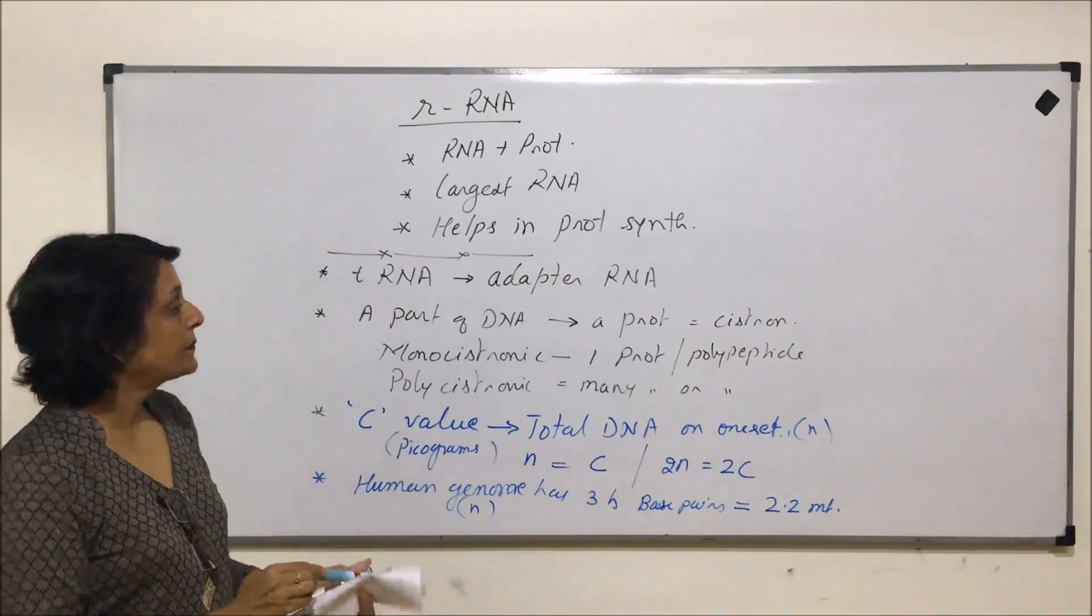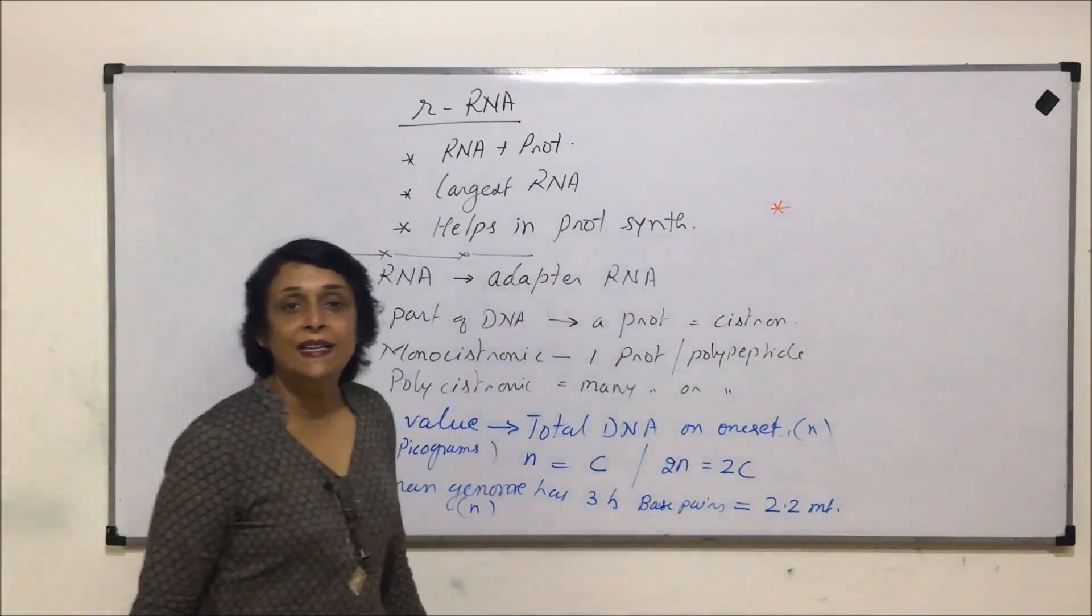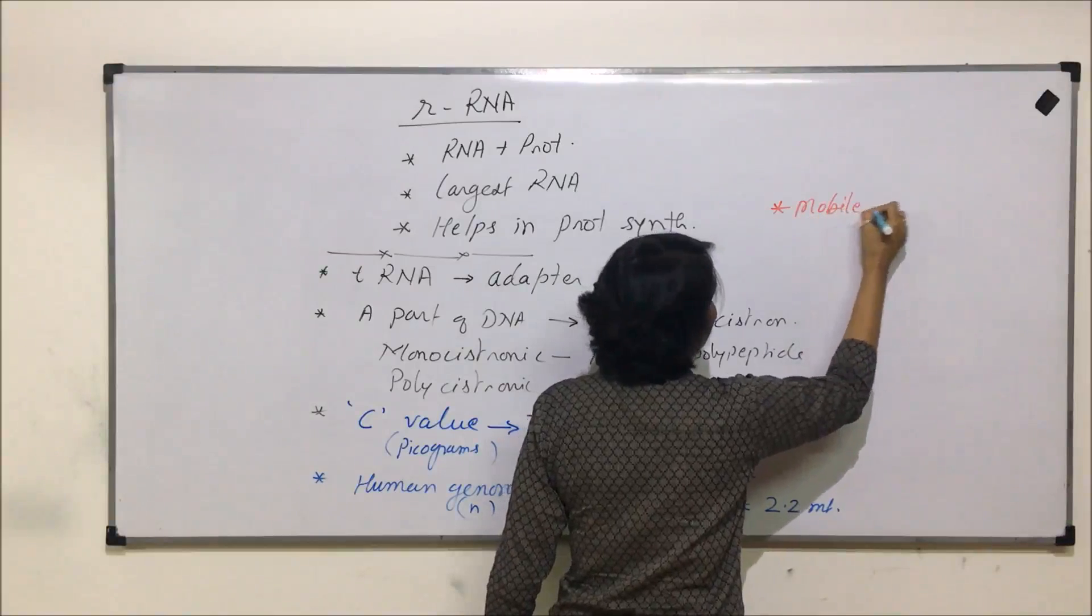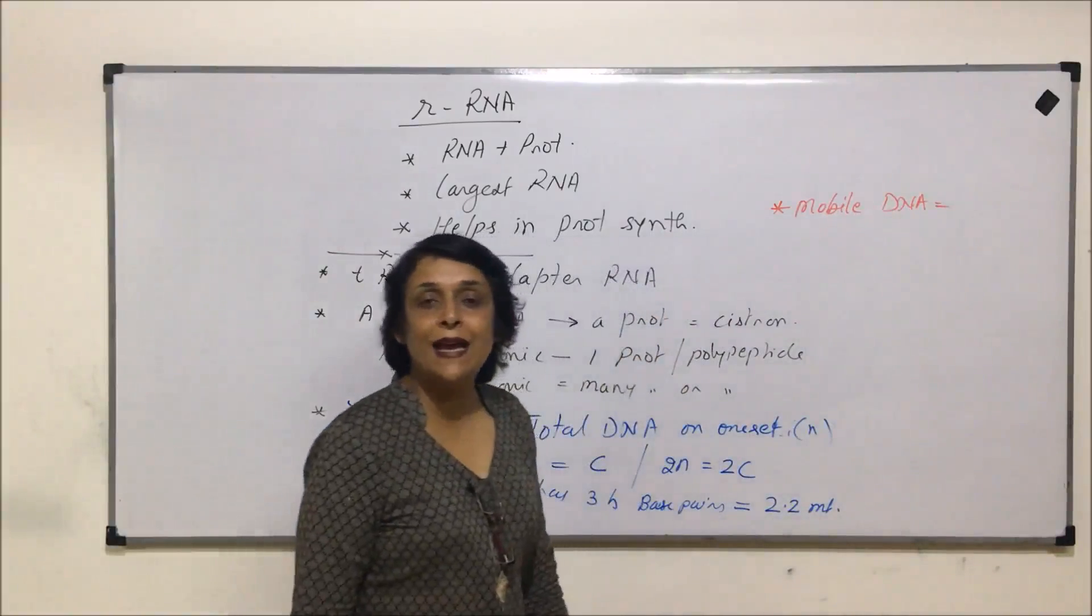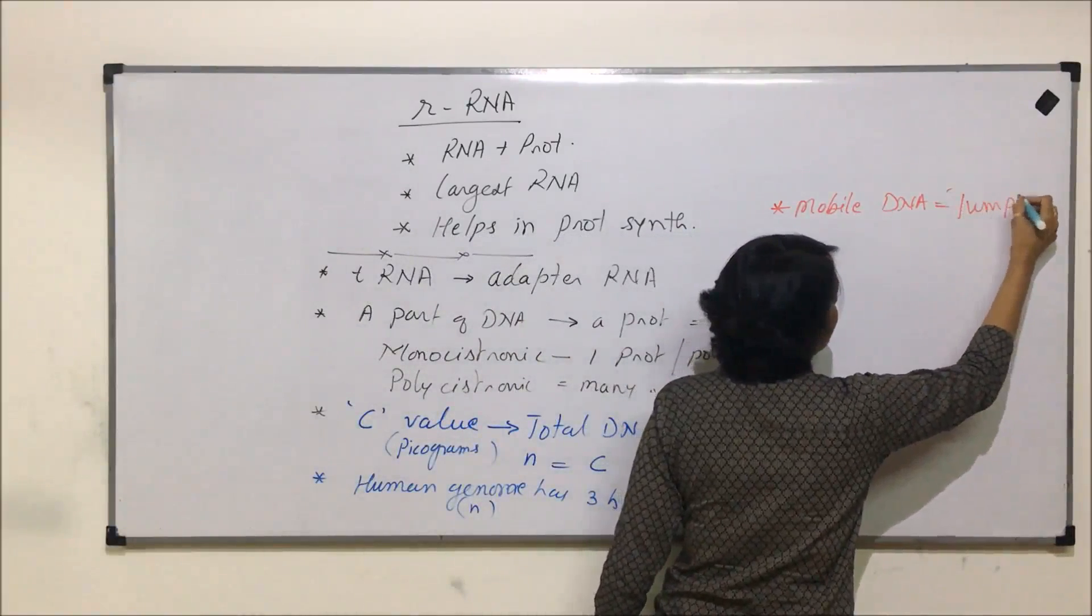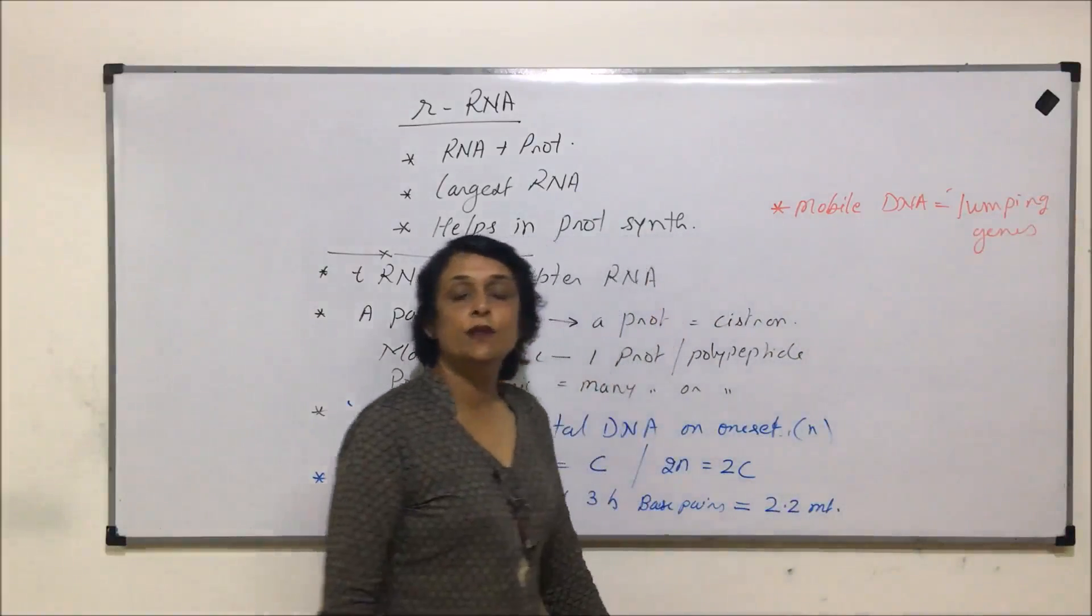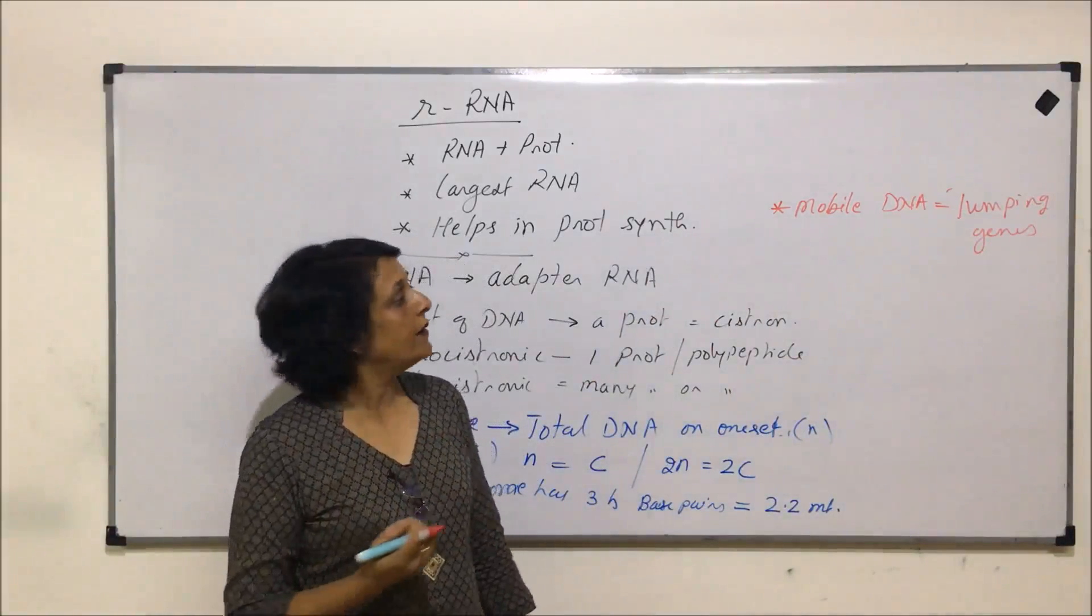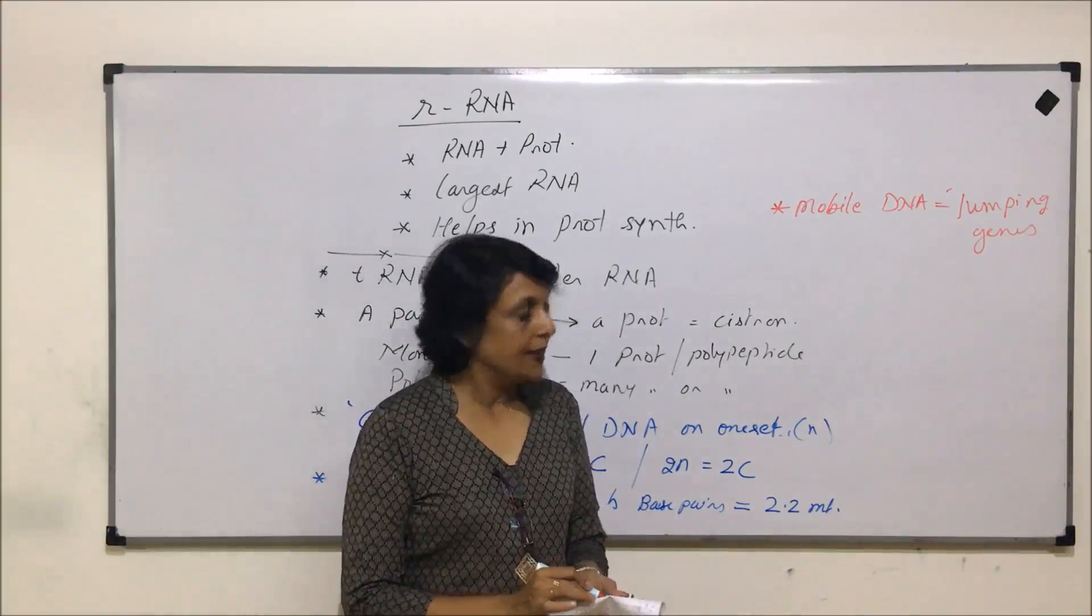One more thing. Certain DNAs are mobile, certain fragments of DNA. We can call them mobile DNA, or they are also termed as jumping genes. As they are able to change their position from one place to another, they are called mobile or jumping genes.